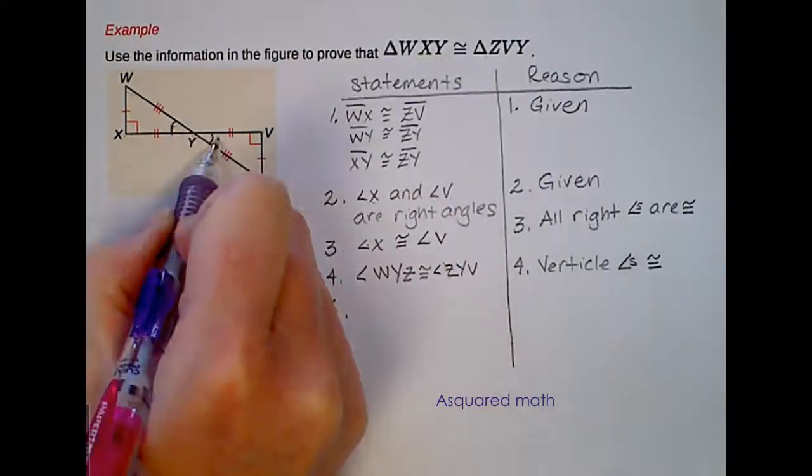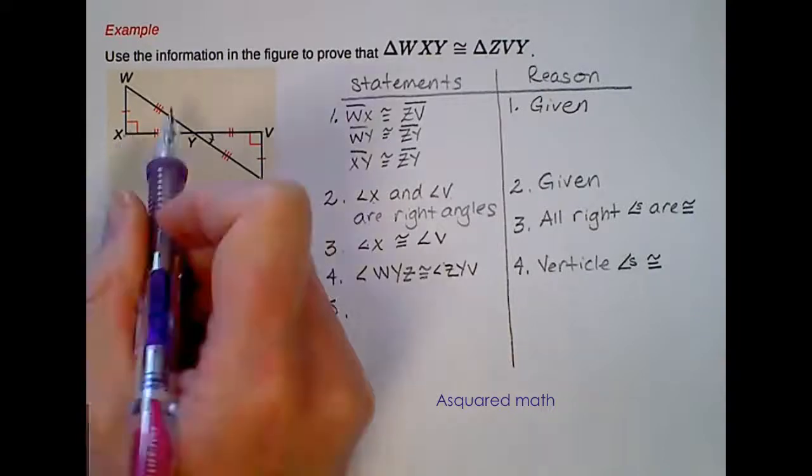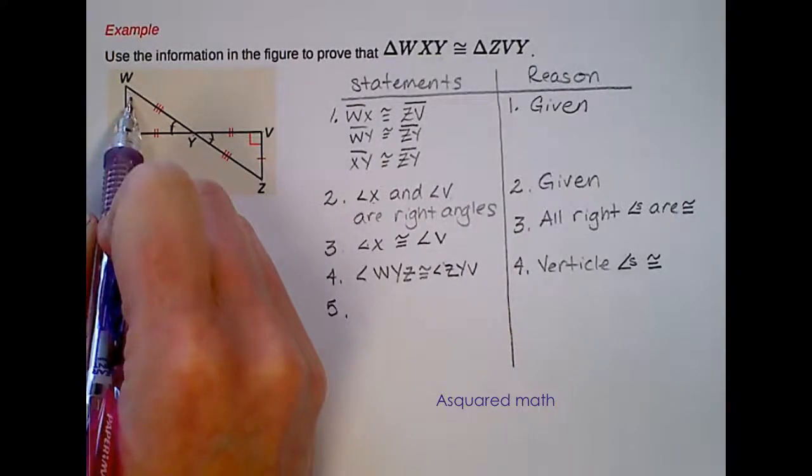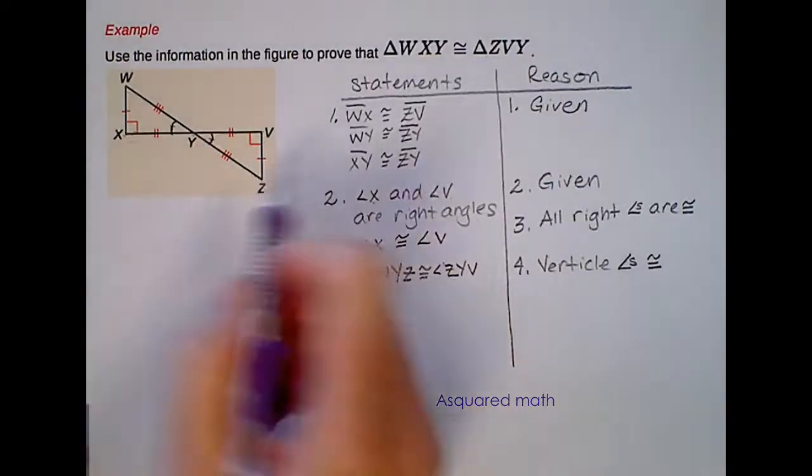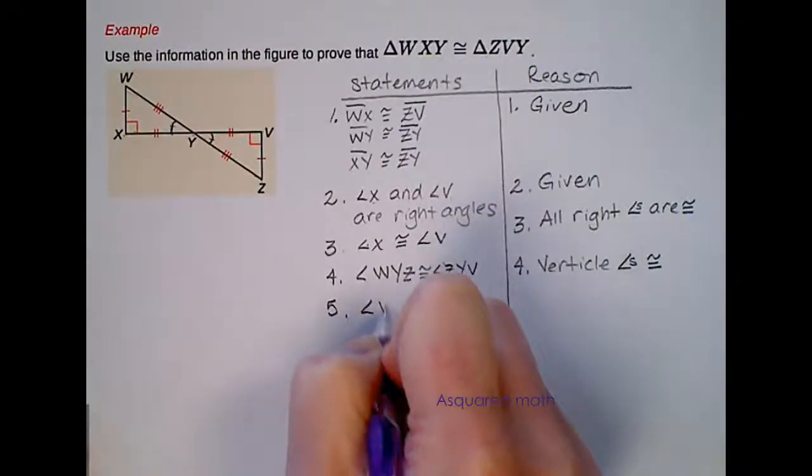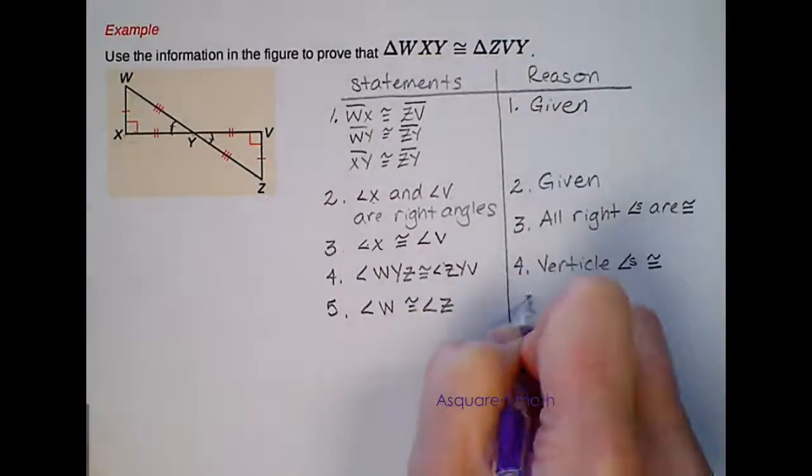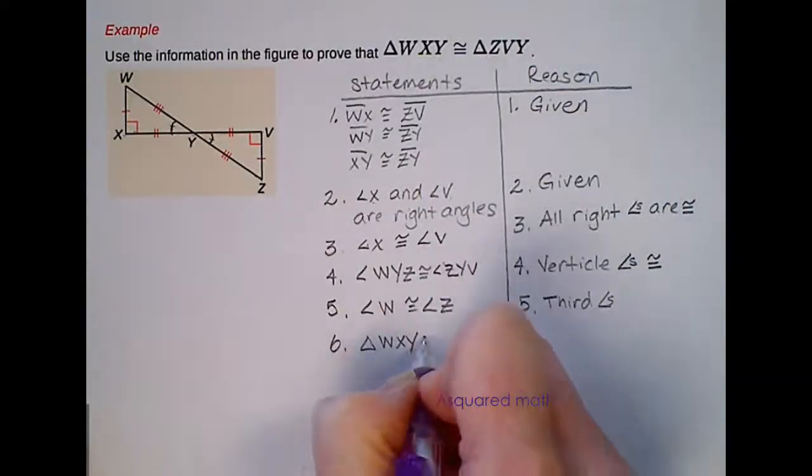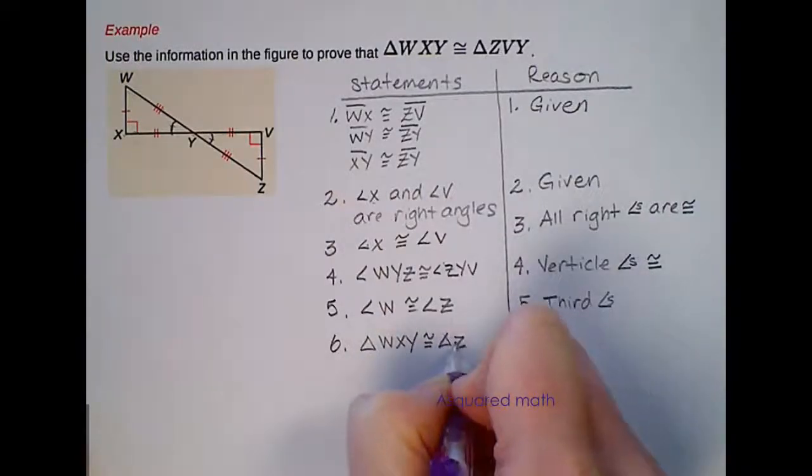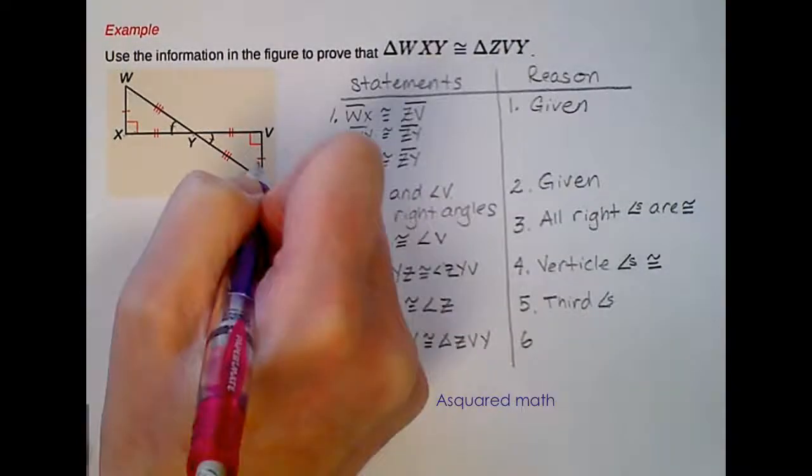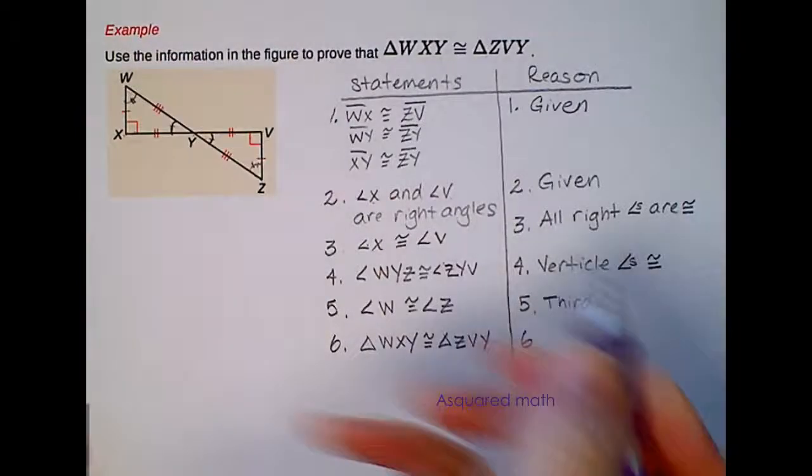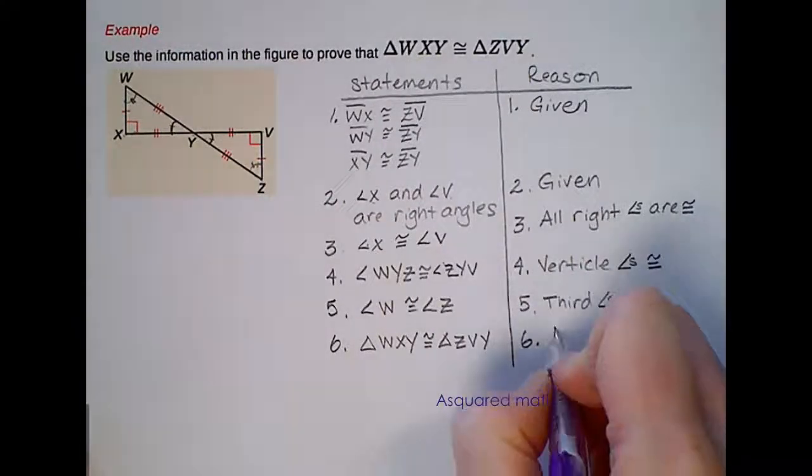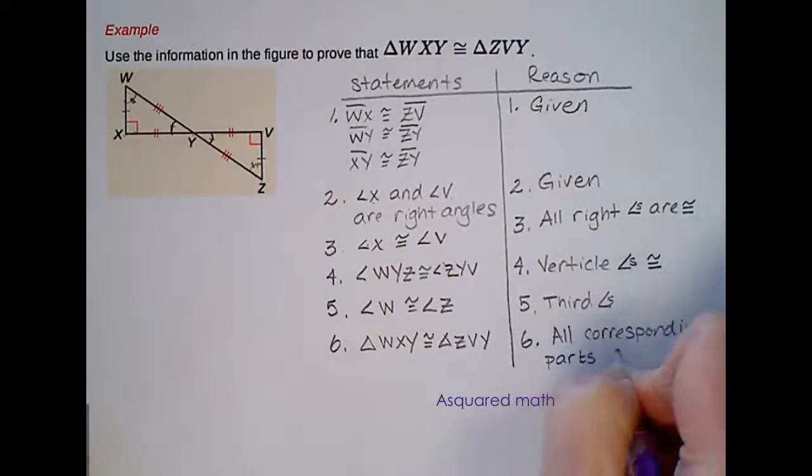So now we have these angles are congruent to each other. So we know this is 90 degrees, this is some angle measure. So 180 minus 90 minus this has to give us this third angle, and the same holds true to give us angle Z. So angle W is congruent to angle Z because of that third angle theorem. Therefore, lastly, we can say that triangle WXY is congruent to triangle ZVY. Because now we have, let me mark up this last angle, we have all angles are congruent and all side lengths are congruent. So the two triangles have to be congruent to each other. Our reason for that will be all corresponding parts are congruent.